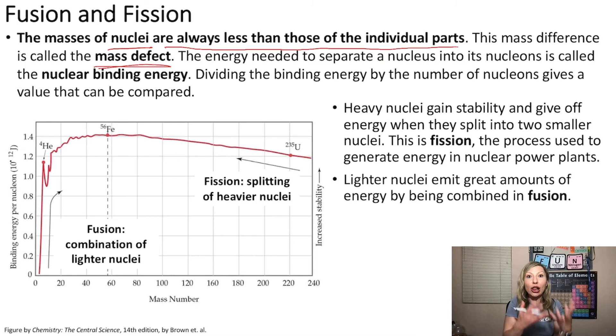And this is connected to the energy that is produced during nuclear reactions using Einstein's famous equation, E equals MC squared, where we can simply convert the mass, in this case this mass defect, into energy using the speed of light as our constant.